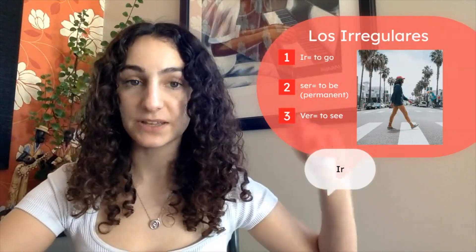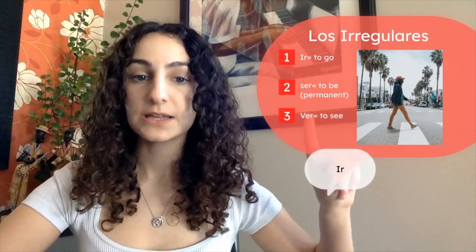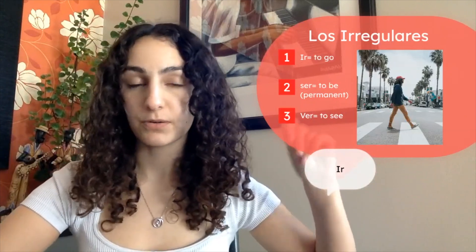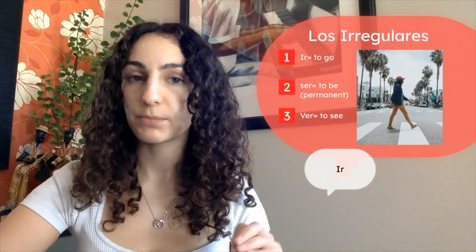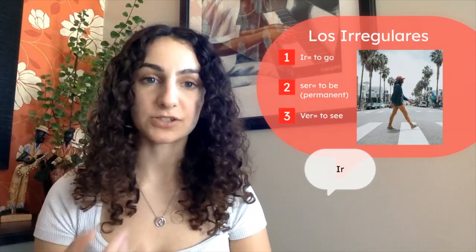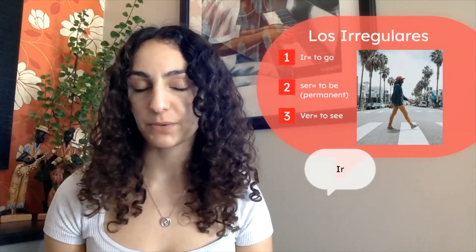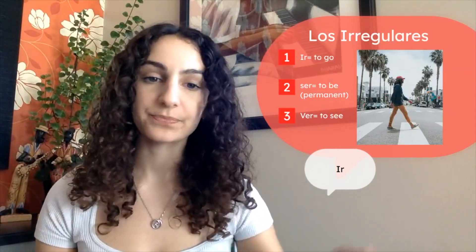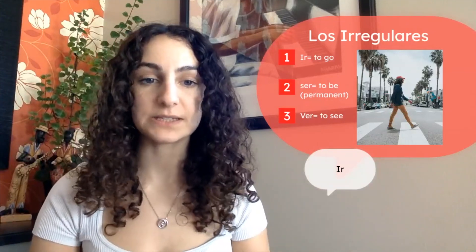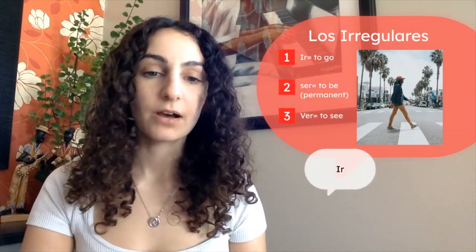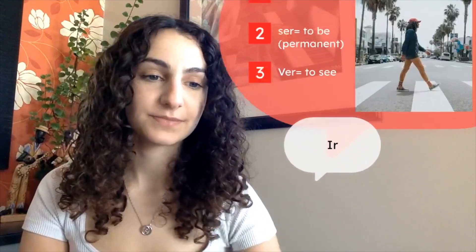Primero tenemos ir, que significa 'to go'; ser, 'to be' — pero permanente, so like 'to be' but permanent — so if you're talking about your gender, your nationality, or your job, that's where you use ser. And ver, 'to see.' So let's get started con ir.